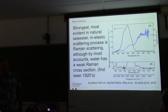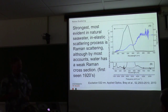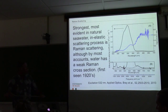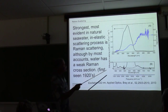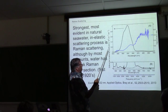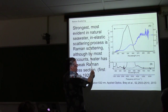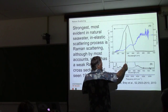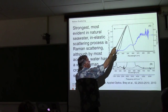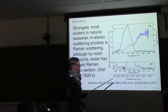The strongest and most evident inelastic scattering process in the natural light field — not talking about fluorescence — is Raman scattering. Raman scattering in water is fairly weak compared to what chemists use. This picture shows Raman scattering with excitation at 532 nanometers. The light comes in at 532 nanometers; the photon that comes out is at about 60 nanometers higher in a broad band.